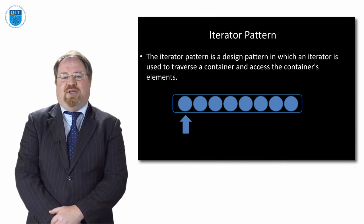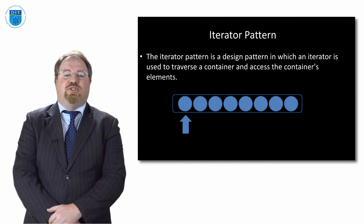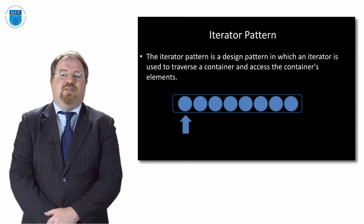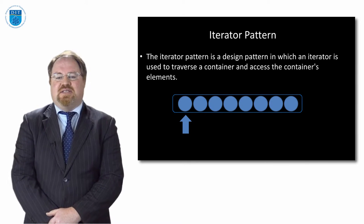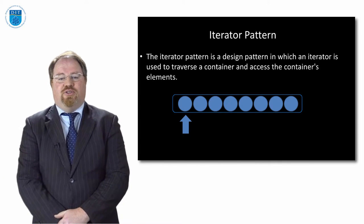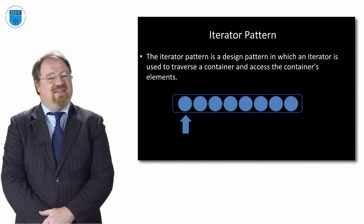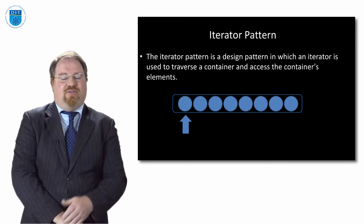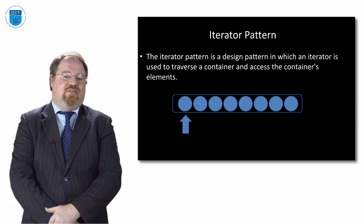So what is the iterator pattern? If I have an array and I want to visit each element, if I have a list and I want to visit each element, if I have a collection of objects that are unenumerated and I want to visit each element, if I have a set and I want to visit each element, the iterator pattern is how I go from the start to the end of the list.